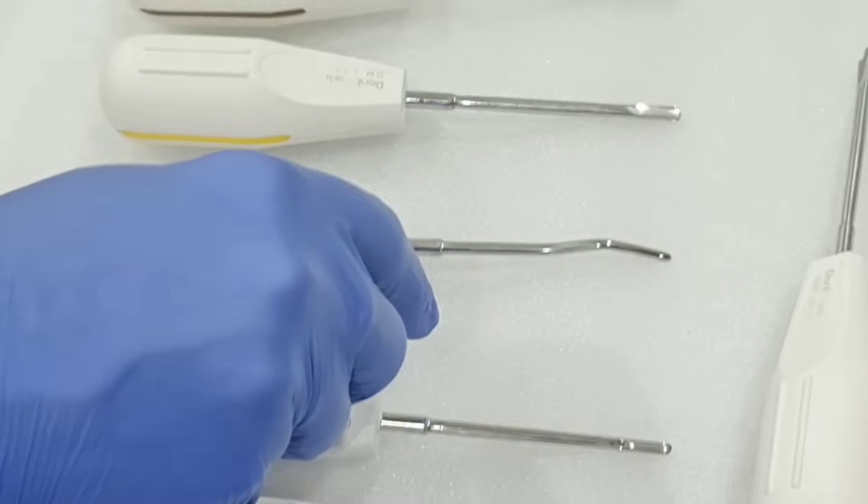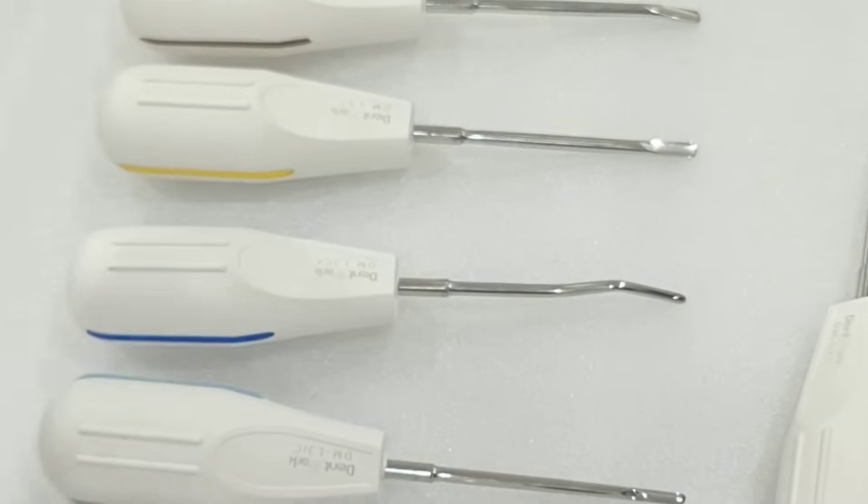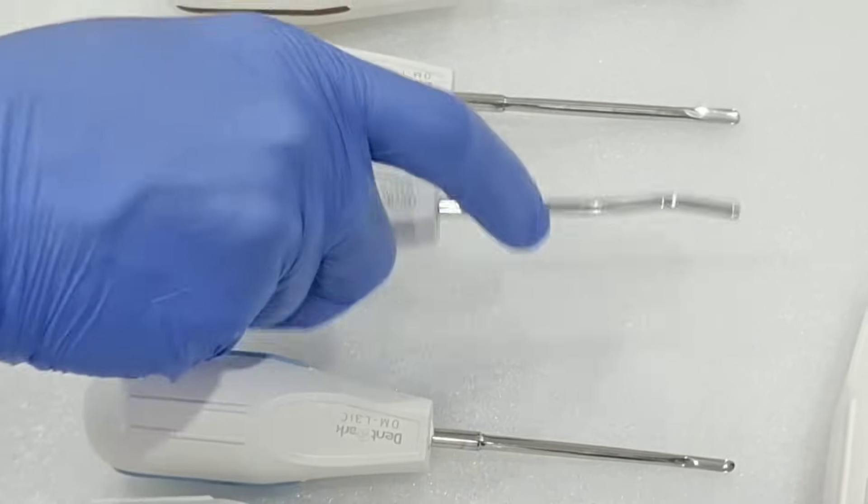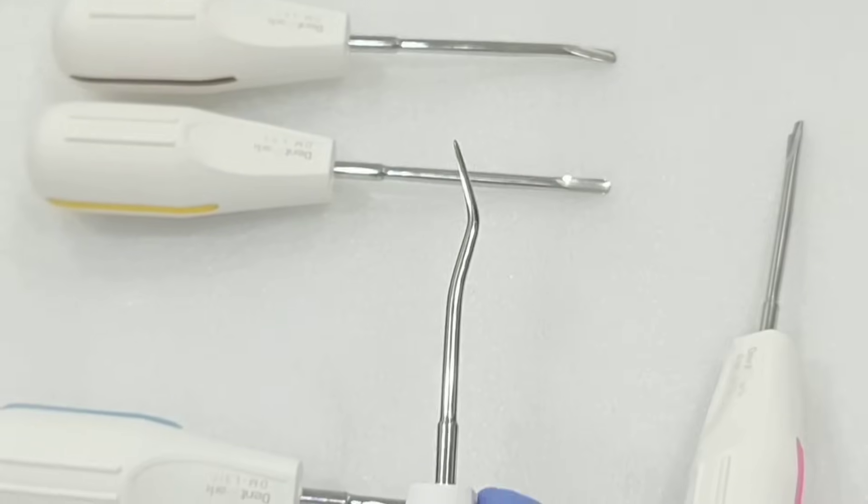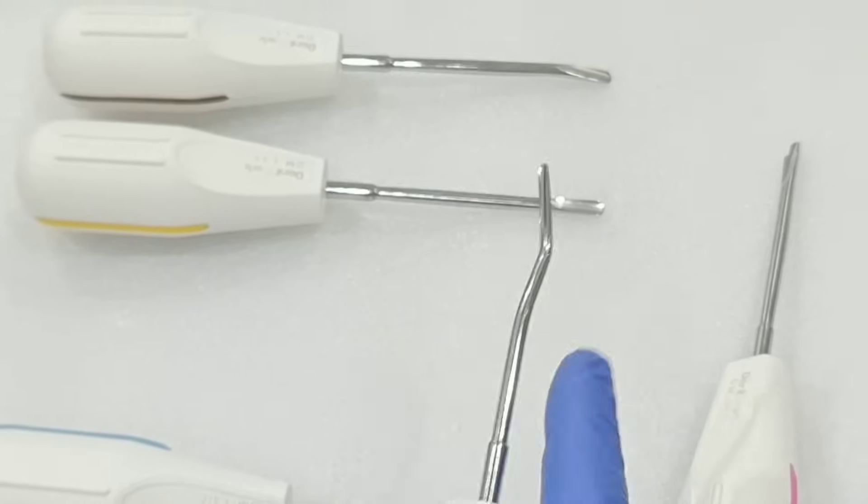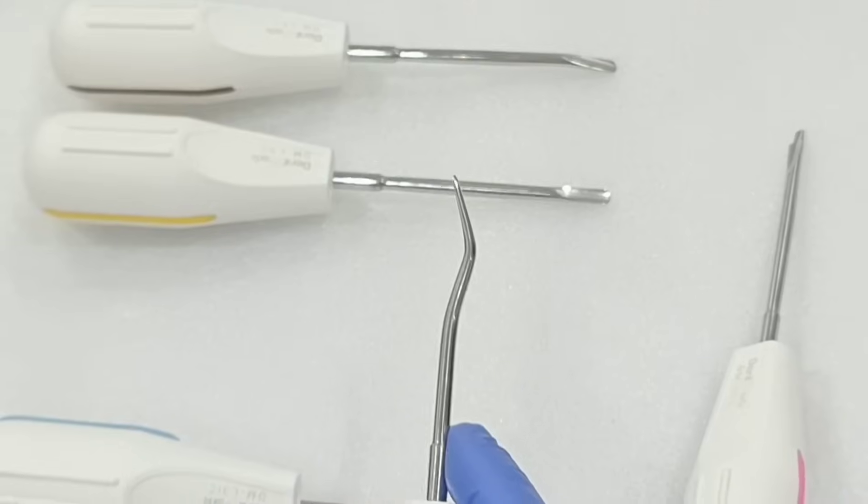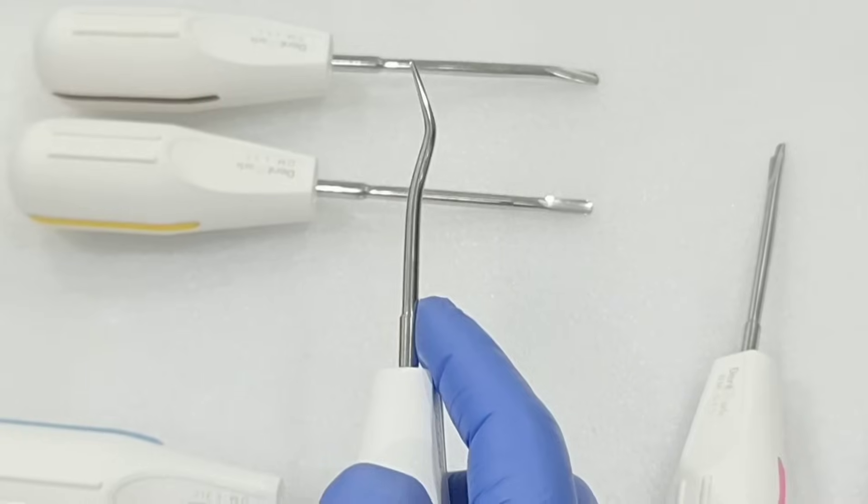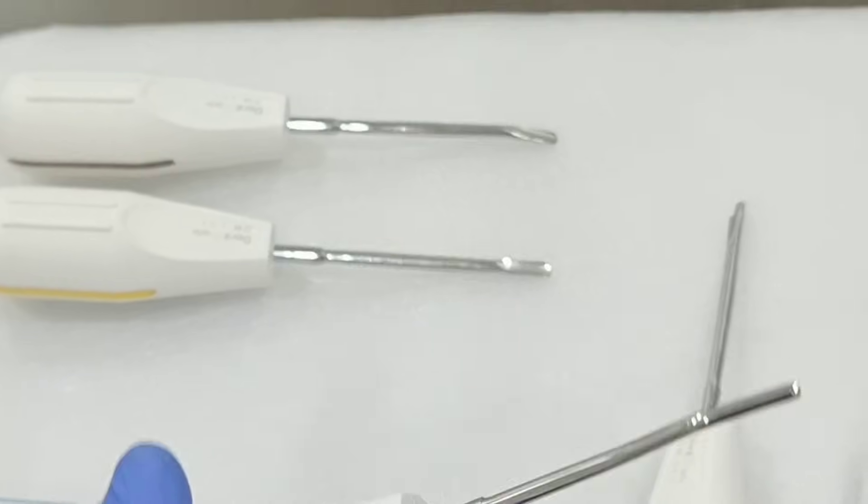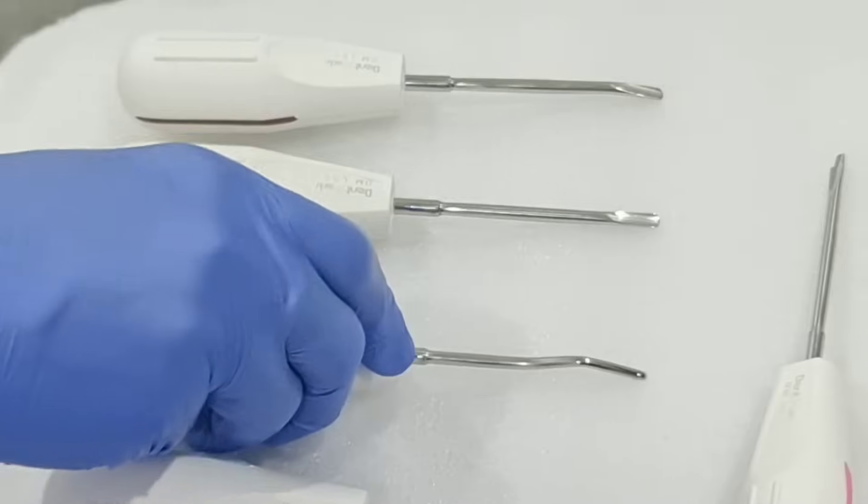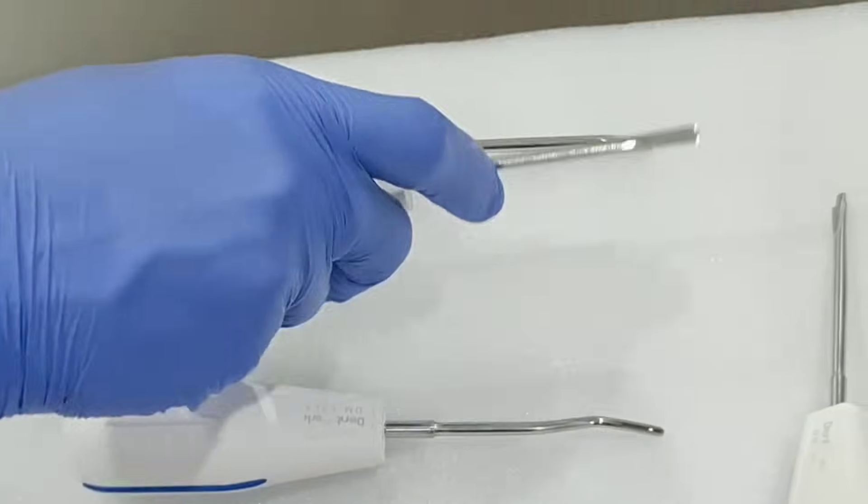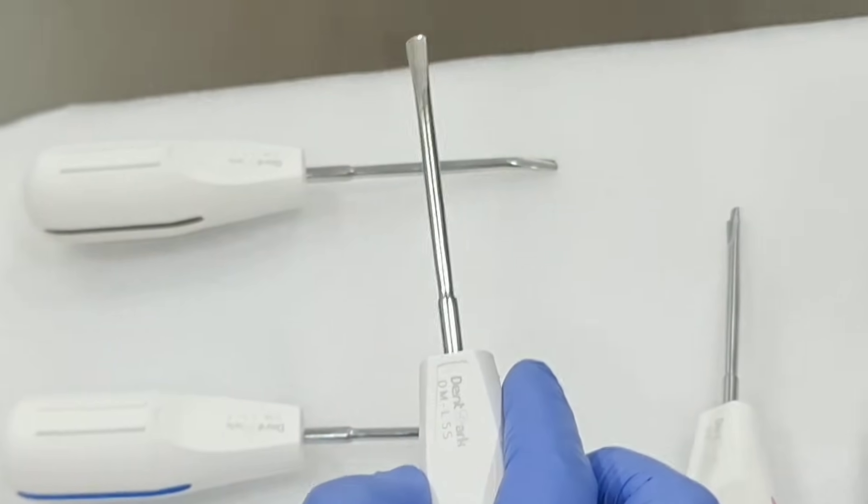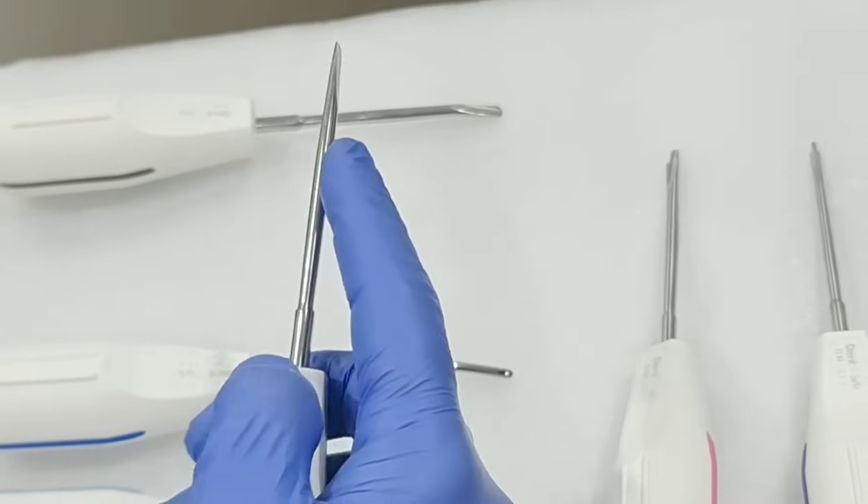This is used for lingual and distal. And another is L3CA, this is contra angle. You can see this is for lingual and distal molars. Now this is L5S, this is 5mm straight.